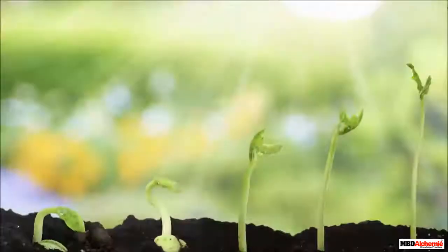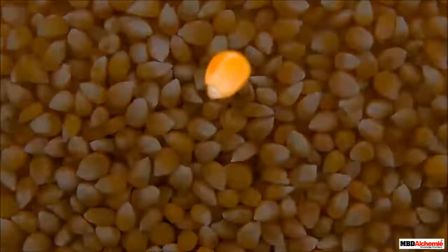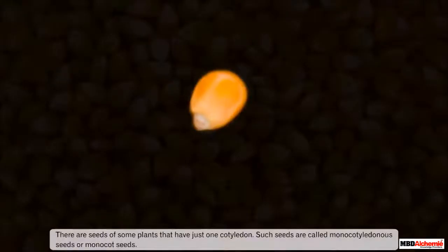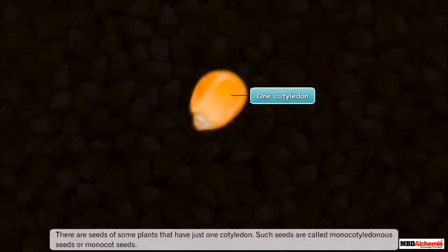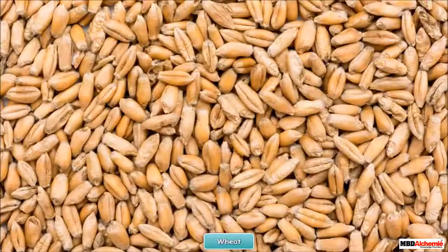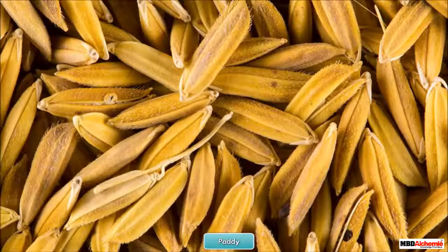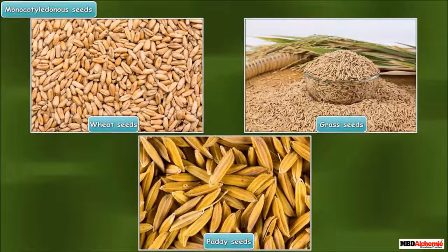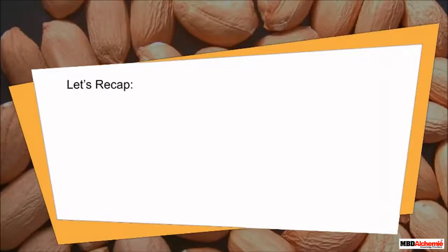This tiny structure is called the baby plant or the embryo. An embryo can grow into a new plant. Unlike dicot seeds, there are seeds of some plants that have just one cotyledon. Such seeds are called monocotyledonous seeds or monocot seeds. Such seeds cannot split into two equal halves. Seeds of wheat, grass and paddy are monocotyledonous seeds.